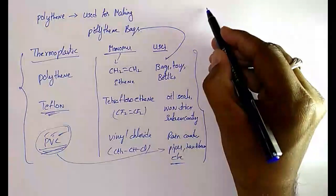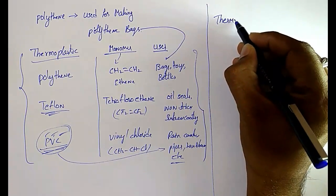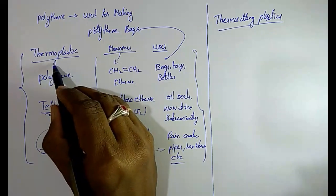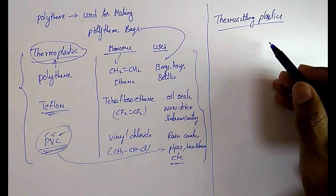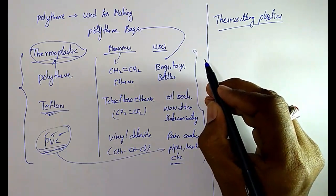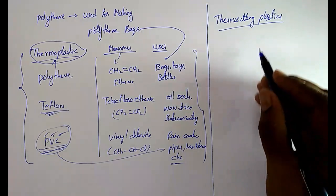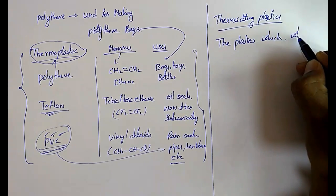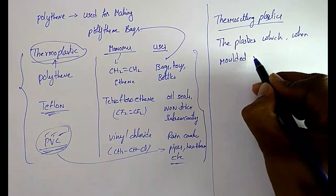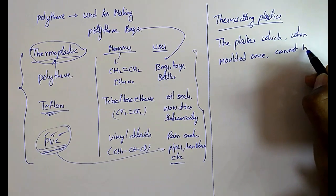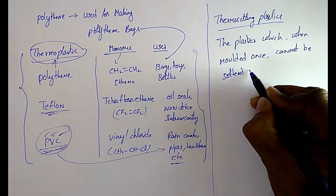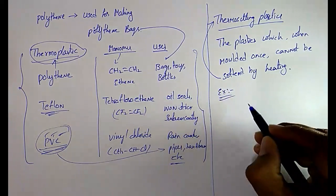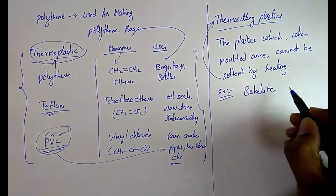Another type of synthetic plastic is thermosetting plastic. In the case of thermoplastics, when we heat them they deform easily. But thermosetting plastics, when molded once, cannot be softened by heating — they cannot be deformed or softened by heating. These plastics are called thermosetting plastics. Examples are bakelite and melamine.